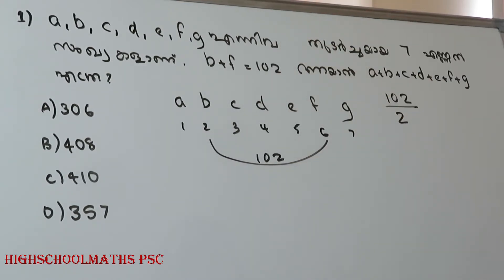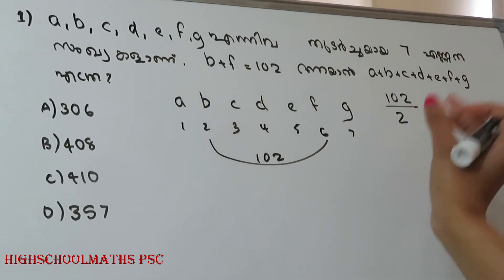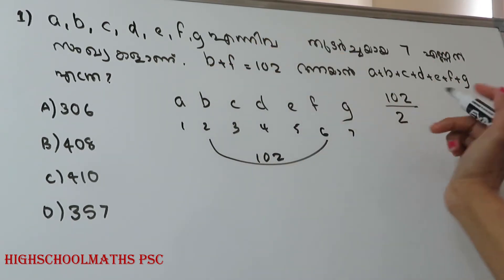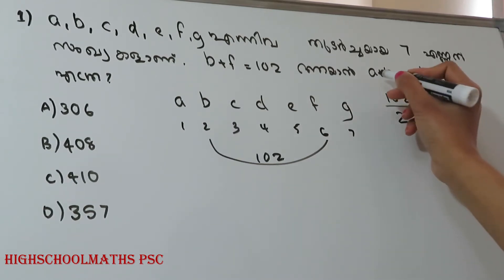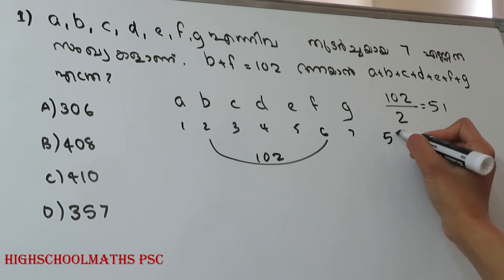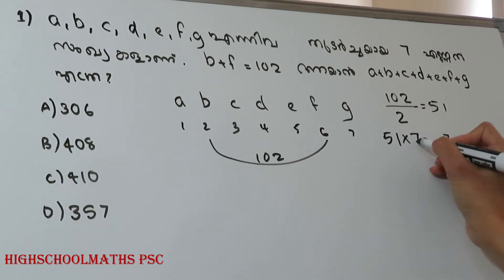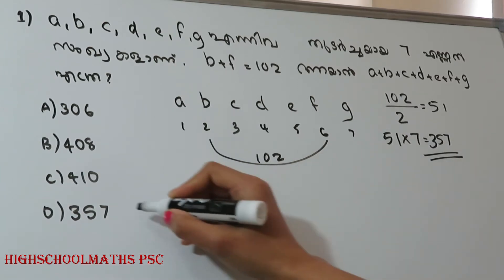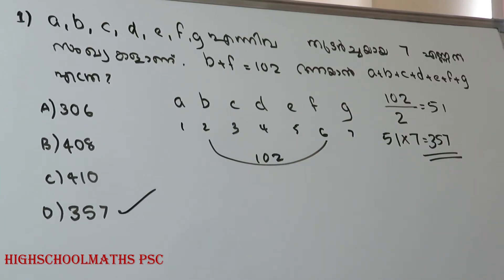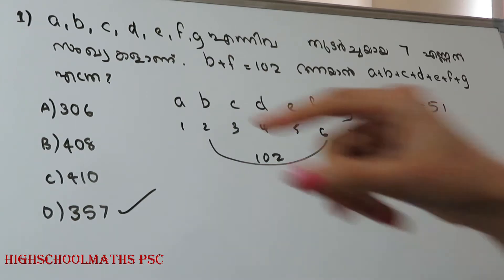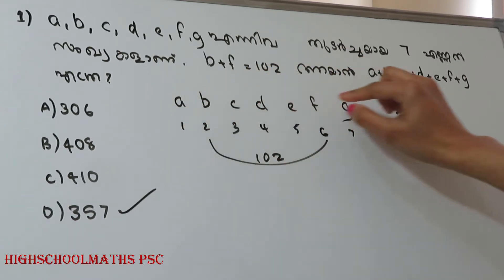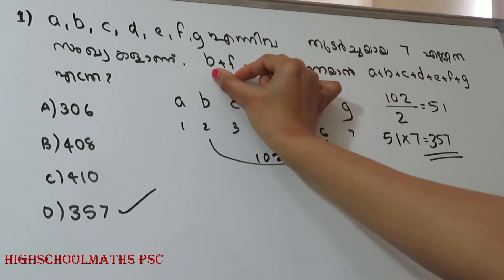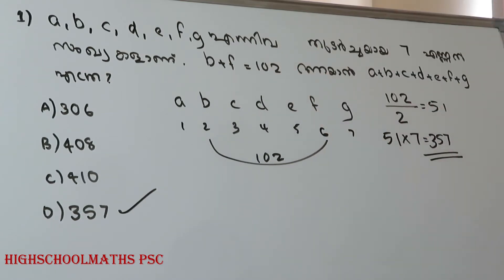It means that the two values are equal to 102. Now if you have two values, it means that two values are also equal. What is equal to 102? So the sum of all 7 consecutive counting numbers can be found from this relationship.